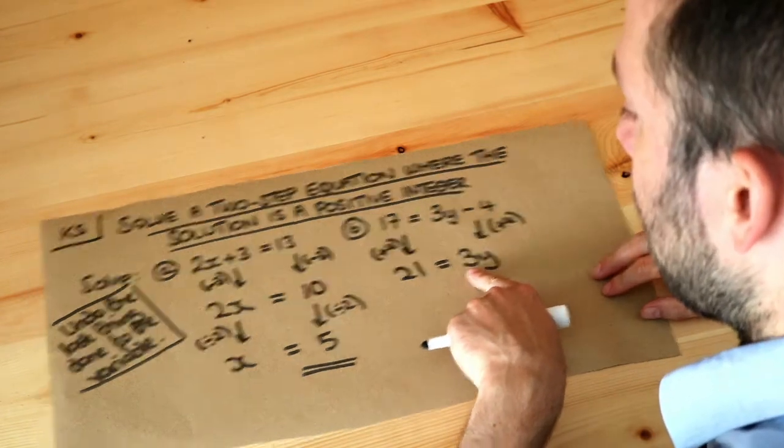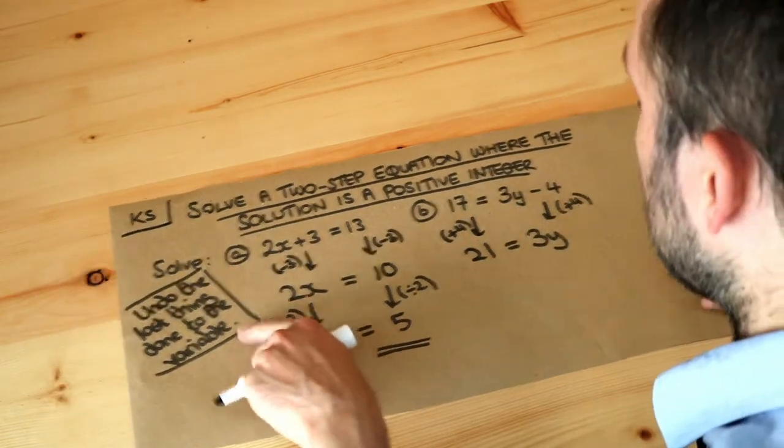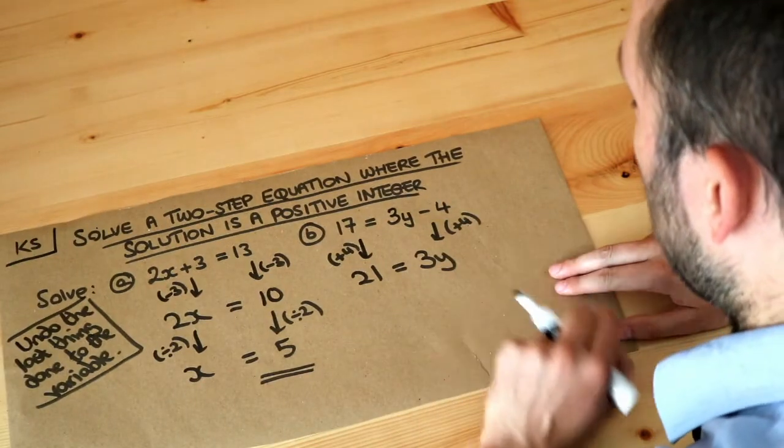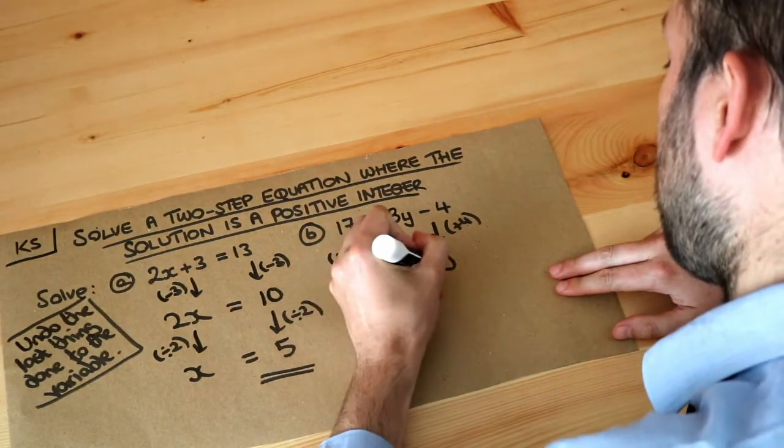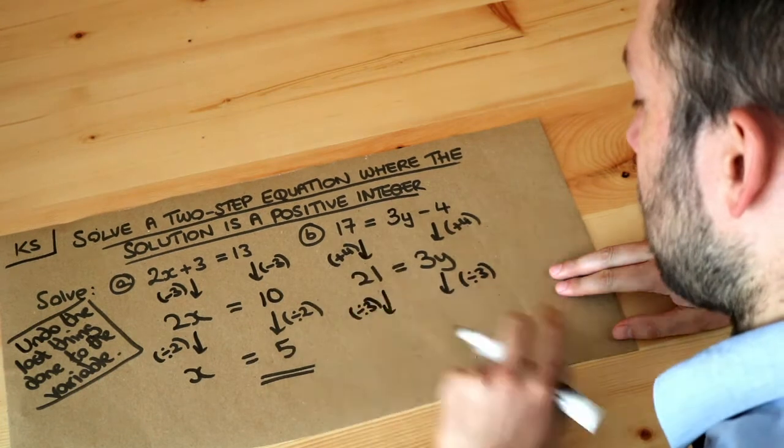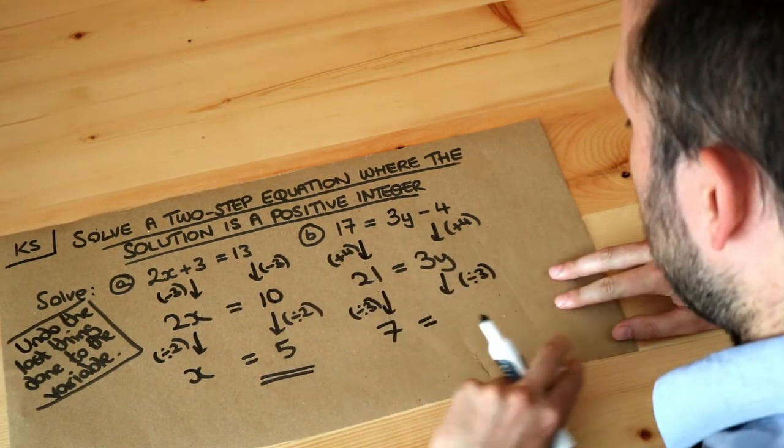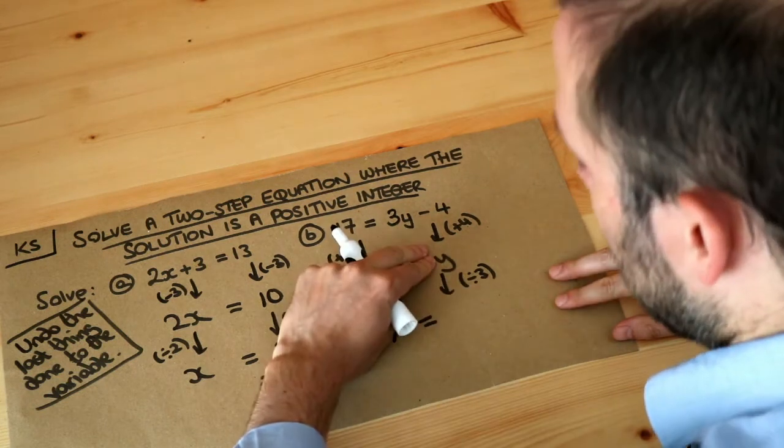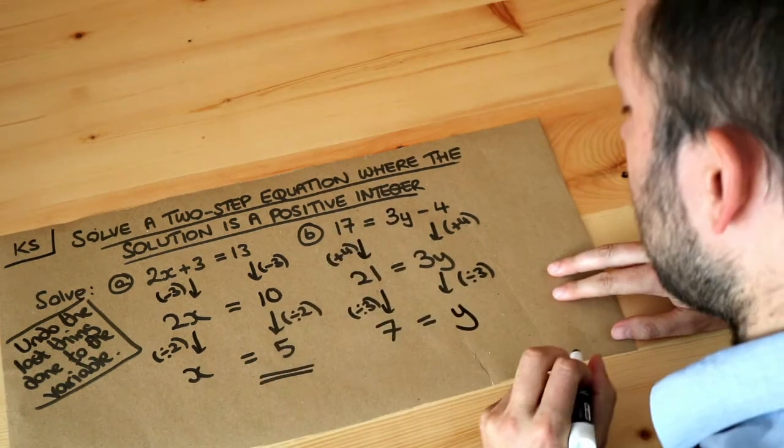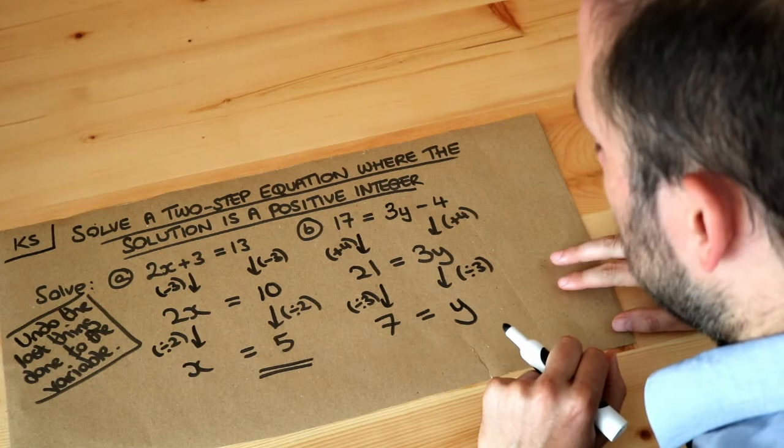Now y is being multiplied by 3. We want to undo the last thing done to the variable, so the opposite of timesing by 3 is dividing by 3. 21 divided by 3 is 7. And 3y divided by 3, the divided by 3 cancels out the times by 3, leaving just y. So the solution is that y is equal to 7.